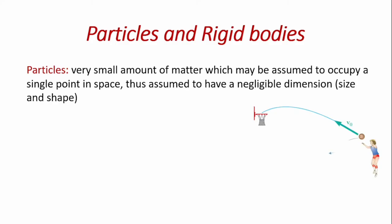A particle, for example, you can have a ball that is being thrown by a man, and the ball can be idealized to be a very small object, neglecting its size, neglecting its shape, and is taken as a particle.